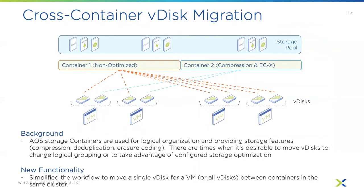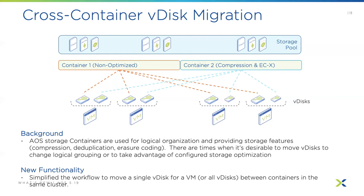Another feature is cross-container v-disk migration. Nutanix storage containers are used for logical organization and storage features such as compression, deduplication, and erasure coding. There are times when it's desirable to move v-disks to change logical grouping or take advantage of configured storage optimizations. In 5.19, we're making it easier to migrate virtual disks between different storage containers. They move to a new container that has compression and erasure coding enabled — no need to create a new virtual machine or new v-disk.